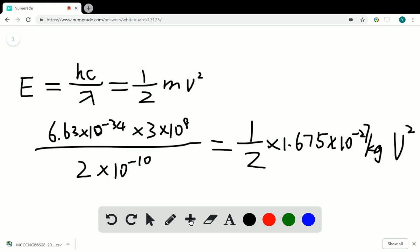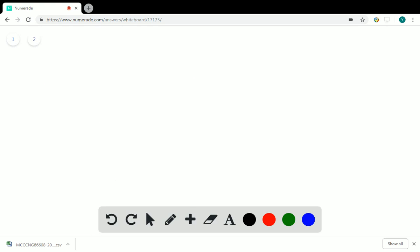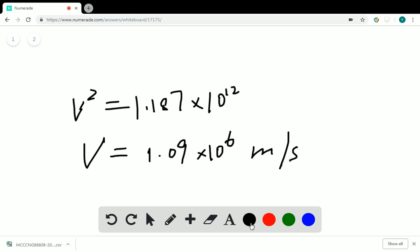And now we can calculate v squared equals 1.187 times 10 to the 12th. And the velocity equals the square root of this number, which is 1.09 times 10 to the 6th meters per second.